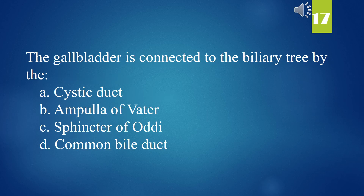The gallbladder is connected to the biliary tree by the: A. Cystic duct. B. Ampulla of Vater. C. Sphincter of Oddi. D. Common bile duct. The answer is A. Cystic duct.